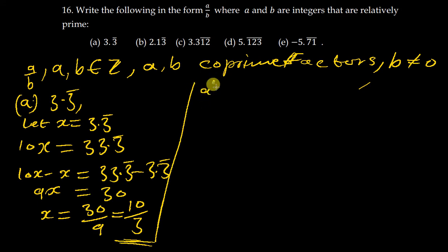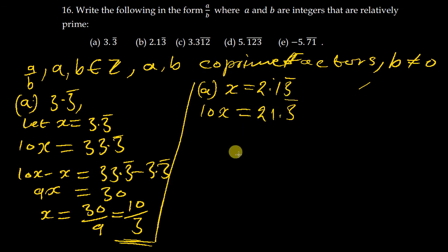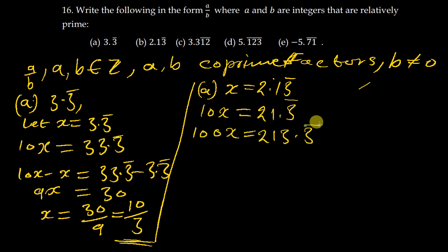Let's move on to part B. We say let x be equal to 2.13 bar. We move this point closer to the repeating number — that is one step — so multiplying by 10 gives us 21.3 bar. Here 3 is the one repeating, so we move the point another step to cover the repeating number, multiplying by another 10, giving us 100x on the left side.